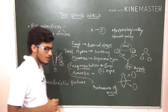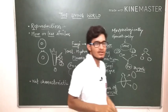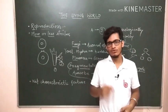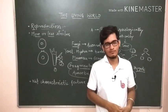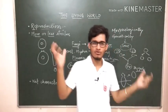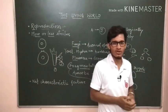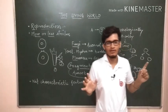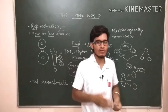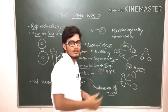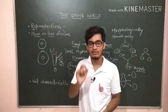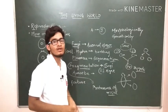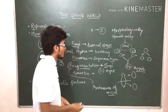Now reproduction is also not a characteristic feature. You must be thinking that non-living organisms cannot reproduce and you are right there. Accumulation of matter can cause growth in non-living organisms, that's fine. But accumulation of matter cannot make non-living things reproduce. So why is it not a characteristic feature? Because there are some living organisms which do not reproduce.